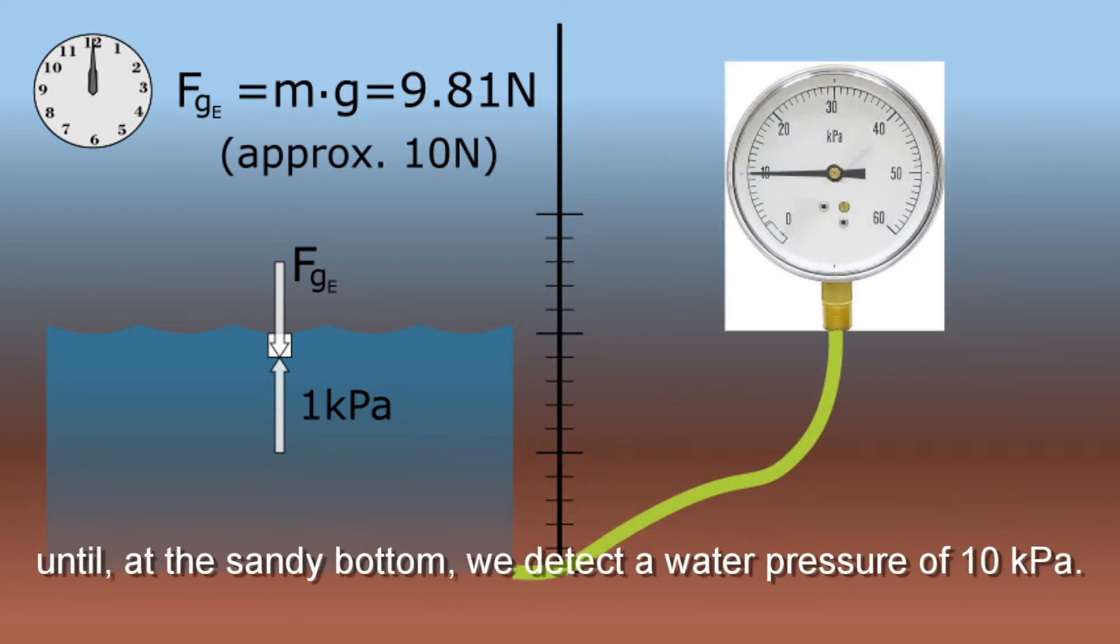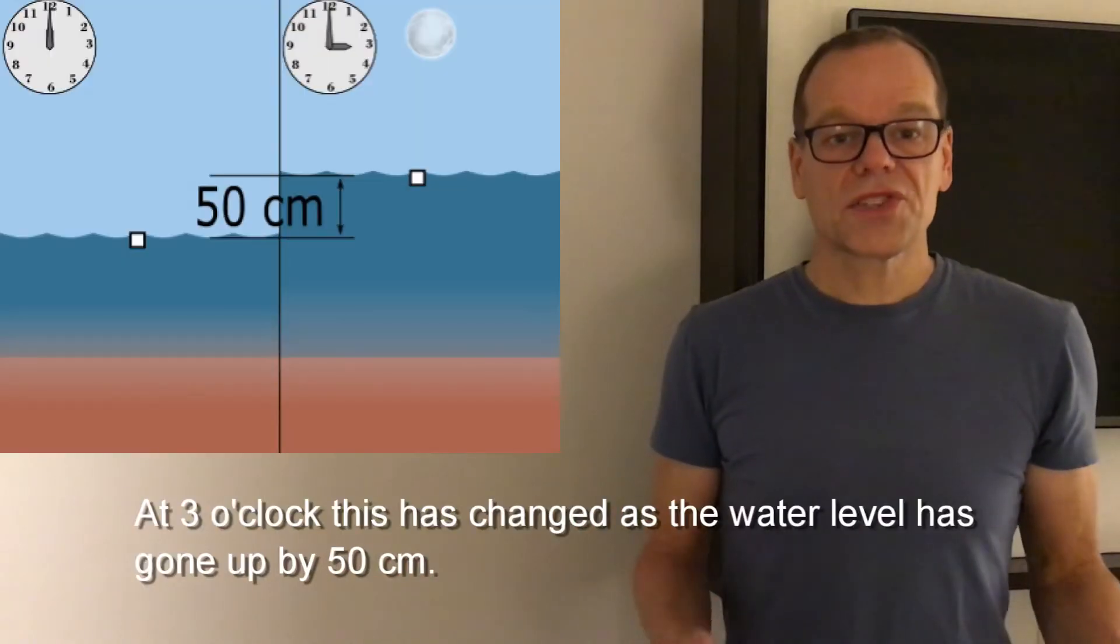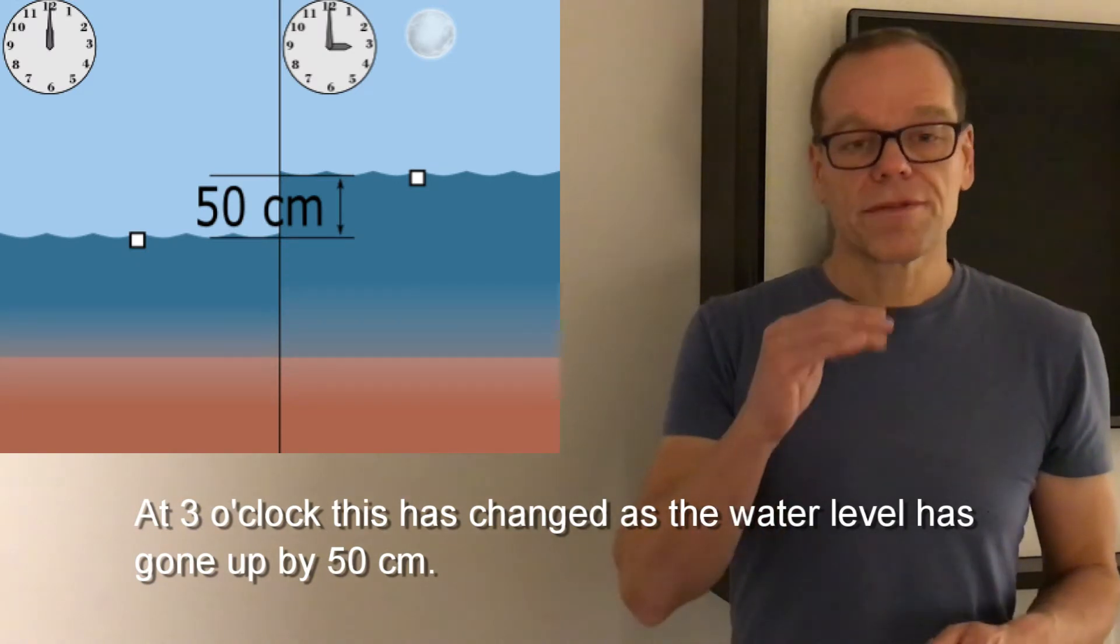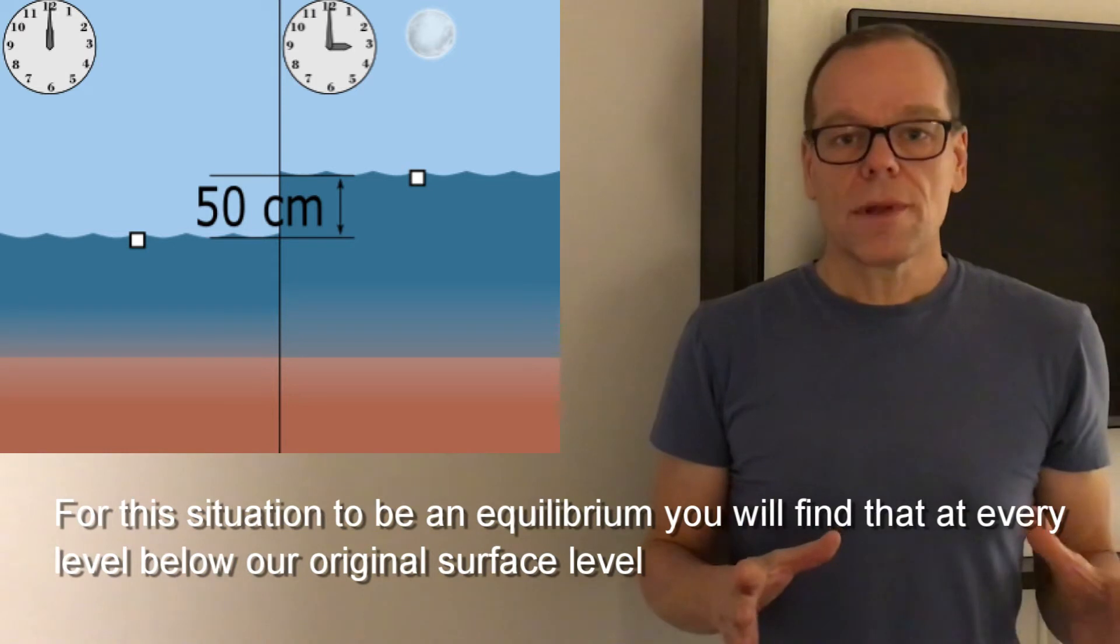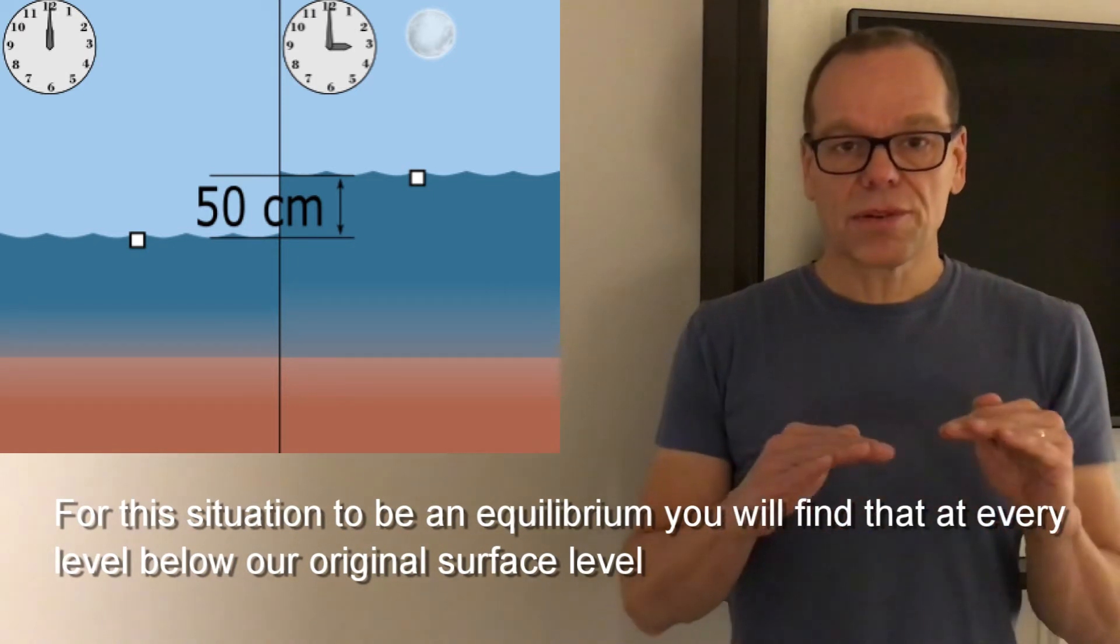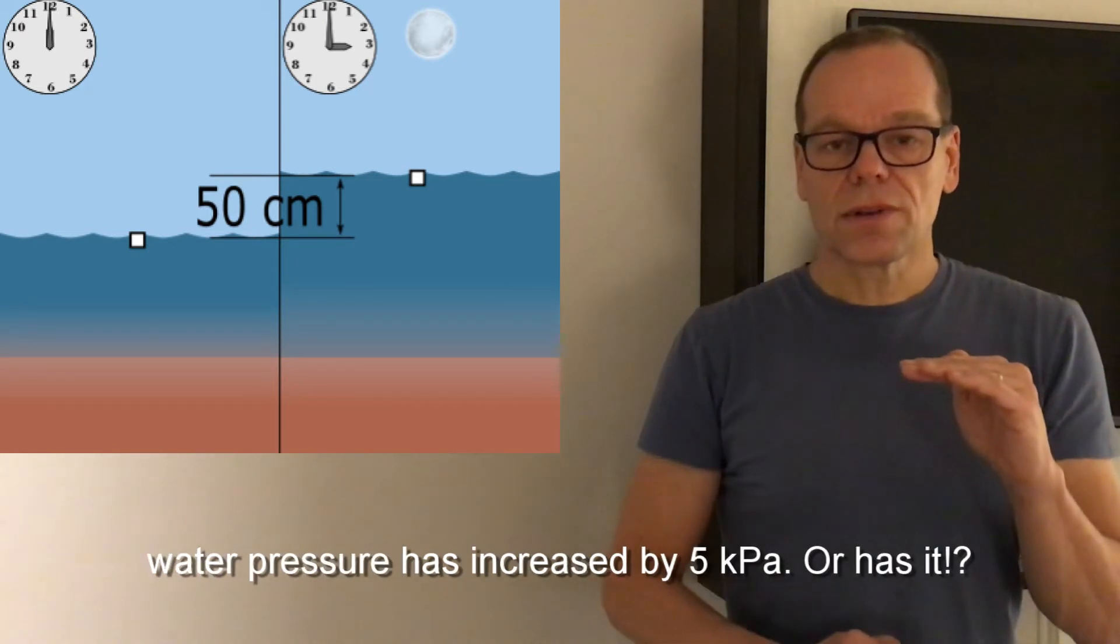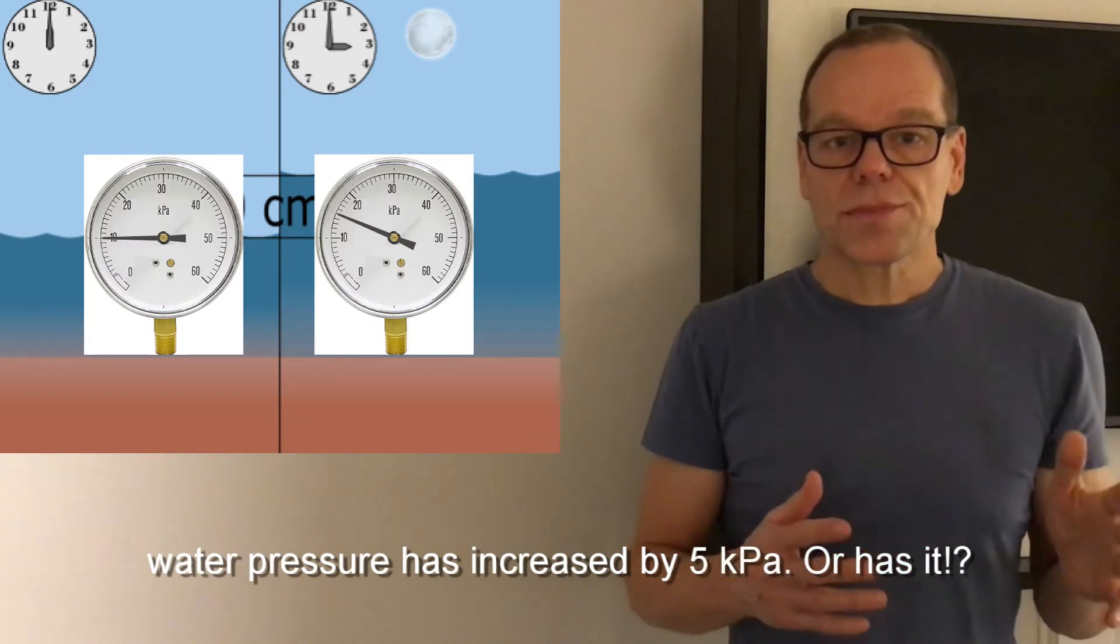Until at the sandy bottom you detect a pressure of 10 kilopascals. At three o'clock this has changed, as the water has gone up by 50 centimeters. For this situation to be in equilibrium, you will find that at every level below our original surface level, water pressure has increased by 5 kilopascals. Or has it?